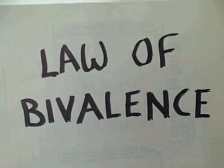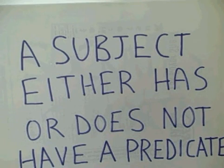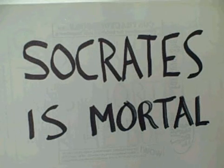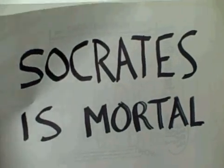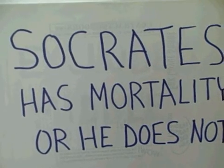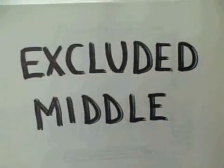We're here today to talk about the Law of Bivalence and the Law of the Excluded Middle. The Law of Bivalence says that a subject either has a given predicate or does not have that predicate — one or the other. For example, let's take the famous claim: Socrates is mortal. According to the Law of Bivalence, Socrates either has the property of being mortal or he does not. It would be impossible for him to be both mortal and immortal at the same time.